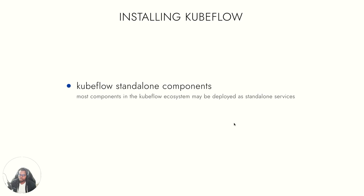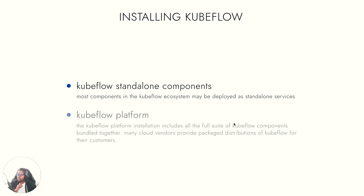There are two ways in which you can install Kubeflow. The first is the Kubeflow standalone component installation, where you pick and choose the components of Kubeflow that you want installed — you don't have to have the entire suite. The second way is the Kubeflow platform installation, which includes the entire suite of components, bundled together. Many cloud providers like Google and AWS offer this as a standalone package distribution.